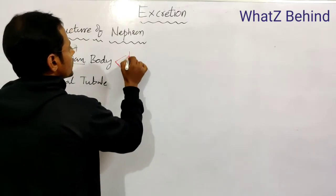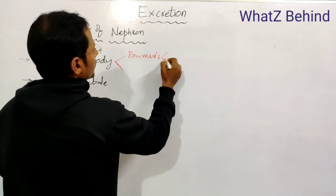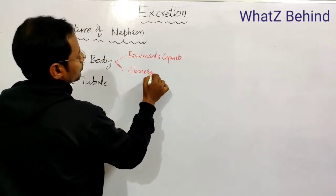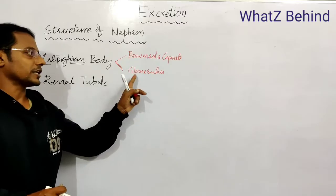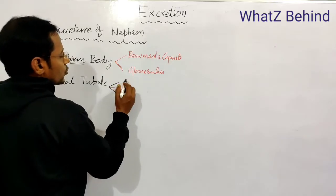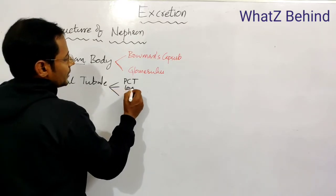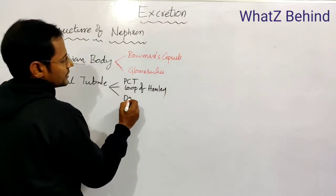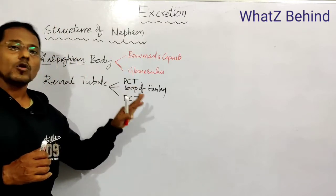So the Malphigian body consists of the Bowman's capsule and the glomerulus. The renal tubule is further divided into three parts: one is the PCT - proximal convoluted tubule, the second is the loop of Henley, and the last one is the DCT - distal convoluted tubule. These are the major parts involved in the nephron structure.